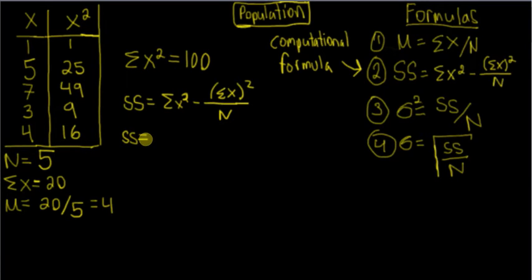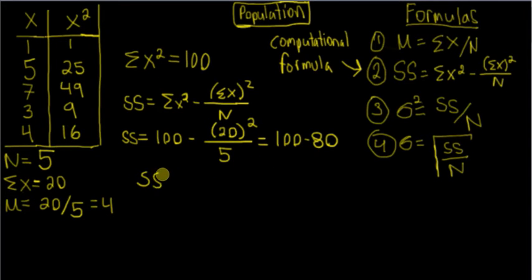So let's continue now. We have sum of squares equals 100 minus, here we have the sum of x, which is 20. Sum of x comes from over here. We'll put a square on top. And then our big n is 5, so we'll put our 5 right there. Now if you have your calculator handy, what I suggest you do first is square the 20. So 20 squared is 400. Divide that by 5. Divided by 5 is 80. So you have 100 minus 80. And then that's easy to solve. Sum of squares: 100 minus 80 is going to give us a 20 for our sum of squares.